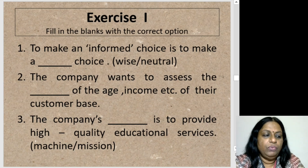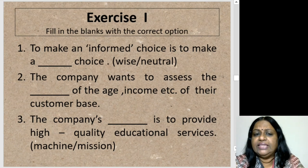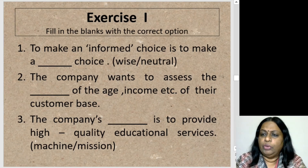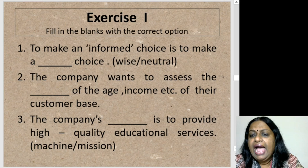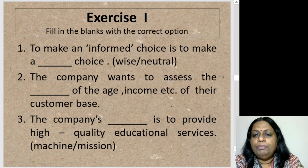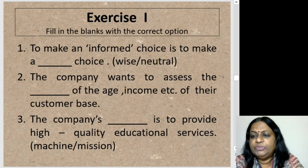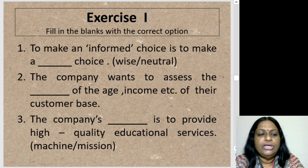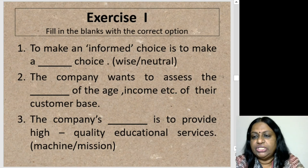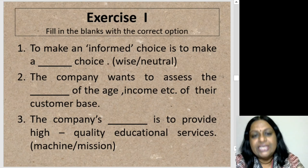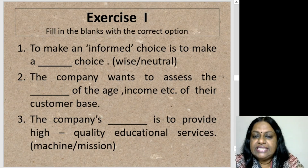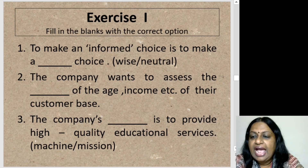Let's do exercise one, which is fill in the blank with the correct option. We have been given two options and need to pick the correct one. To make an informed choice is to make a blank choice. The options are 'wise' and 'neutral'.